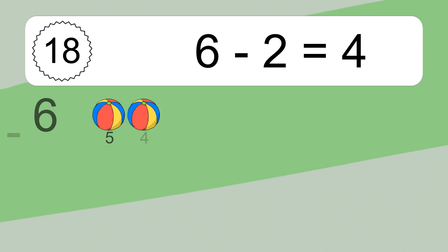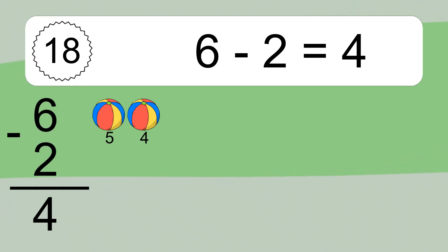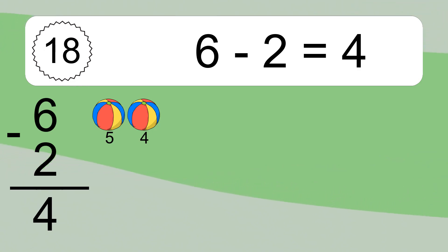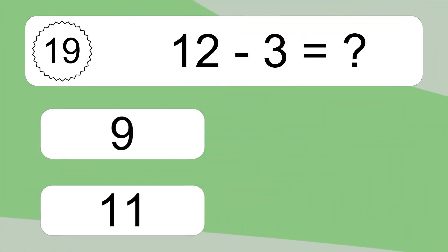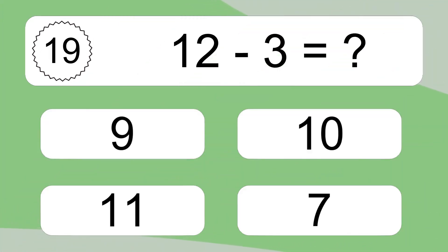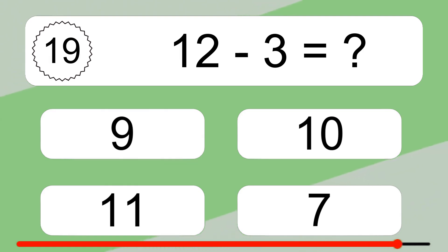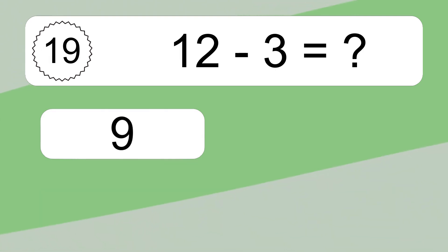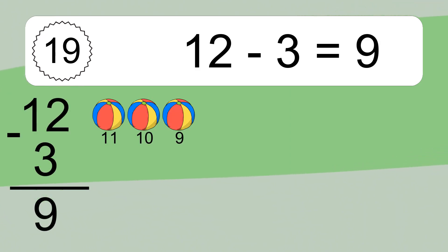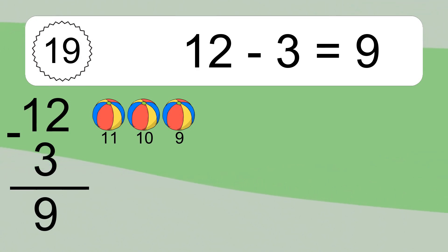6 minus 2 equals 4. Let's count it: 5, 4. 12 minus 3 equals what? 12 minus 3 equals 9. Let's count it: 11, 10, 9.